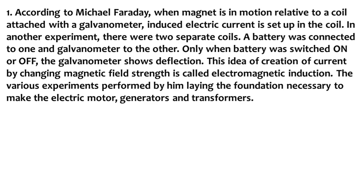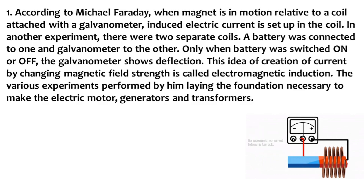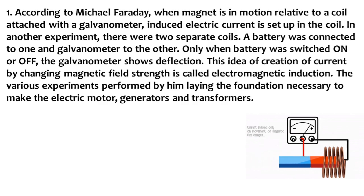Question number one: according to Michael Faraday, when a magnet is in motion relative to a coil attached with a galvanometer, an induced electric current is set up in the coil. In another experiment, there were two separate coils — a battery was connected to one and a galvanometer to the other. Only when the battery was switched on or off did the galvanometer show deflection. This idea of creation of current by changing magnetic field strength is called electromagnetic induction. The various experiments performed by him laid the foundation necessary to make electric motors, generators, and transformers.